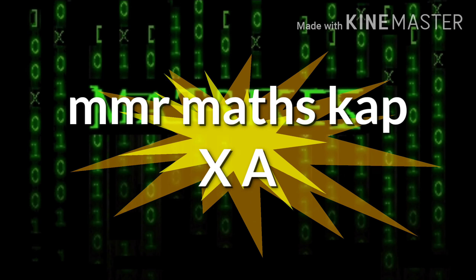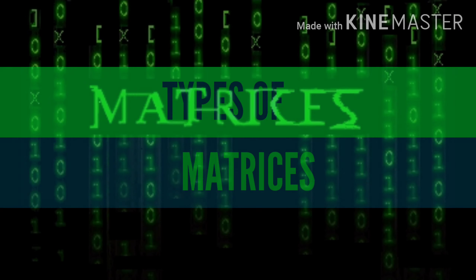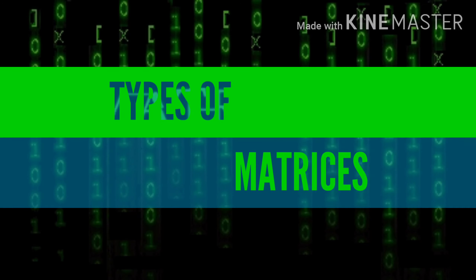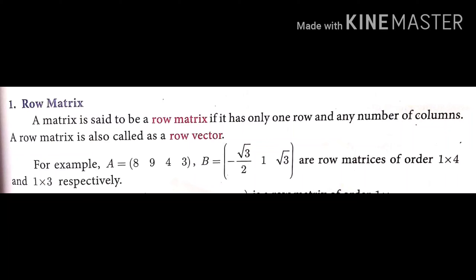Hello students, now we are going to define certain types of matrices. The first one is row matrix. A matrix that has only one row and any number of columns is called a row matrix.